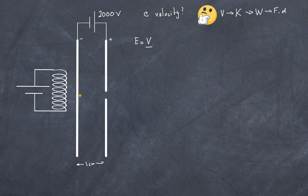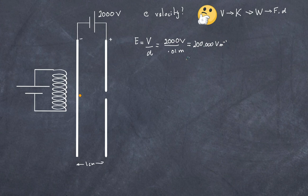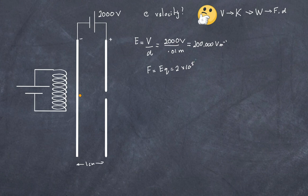The electric field equals voltage divided by distance: 2000 V over 0.01 m gives 200,000 V/m (or N/C). The force on the electron is F = EQ: 2×10⁵ multiplied by 1.6×10⁻¹⁹ C gives 3.2×10⁻¹⁴ N.